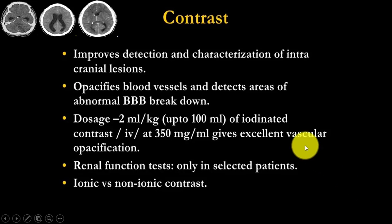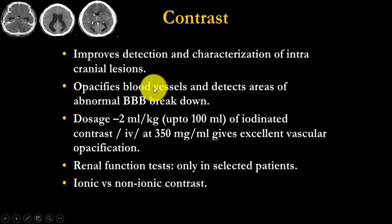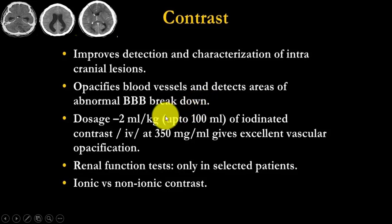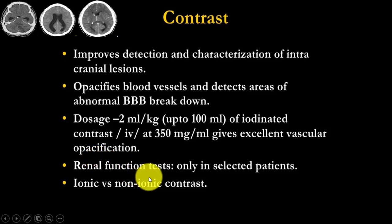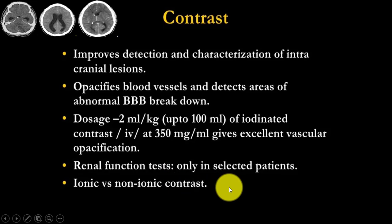In CT scan, contrast materials are used in special conditions. Contrast material improves detection and characterization of intracranial and intra-abdominal lesions, opacifies blood vessels, and detects abnormal blood-brain barrier breakdown. The dose is 2 ml per kg up to 100 ml, and iodinated contrast at 350 mg per ml gives excellent vascular opacification. These contrast agents are nephrotoxic, so renal function must be normal. Contrast material may be ionic or non-ionic.